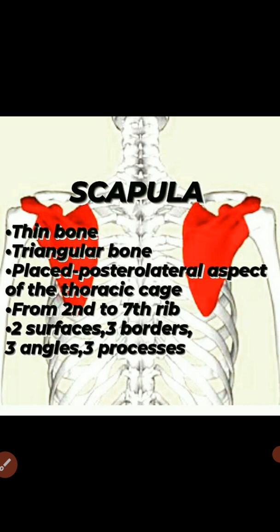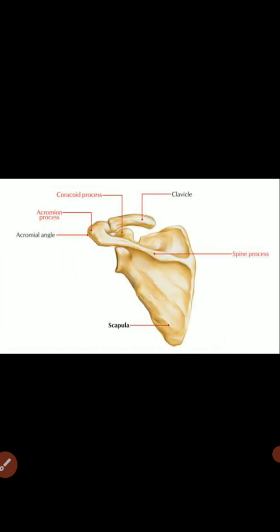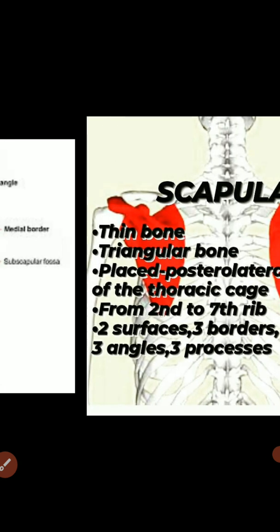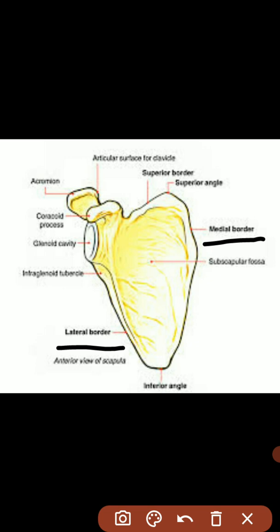Scapula is a thin, triangular bone placed on the posterior lateral aspect of the thoracic cage, from the second to seventh rib. It has two surfaces: costal surface and dorsal surface. It has three borders: lateral border, medial border, and superior border.